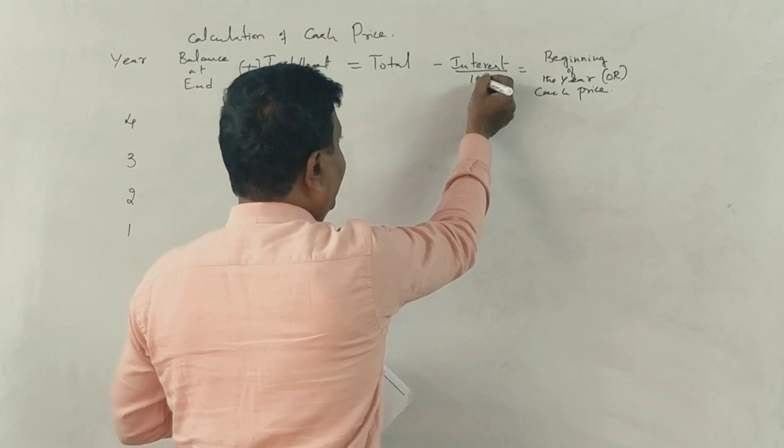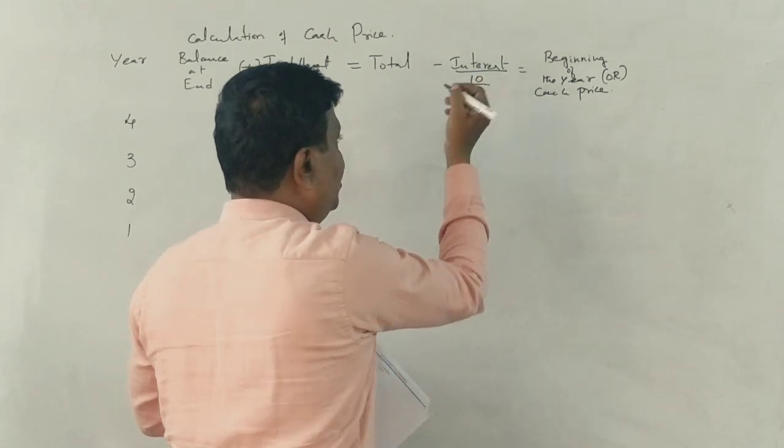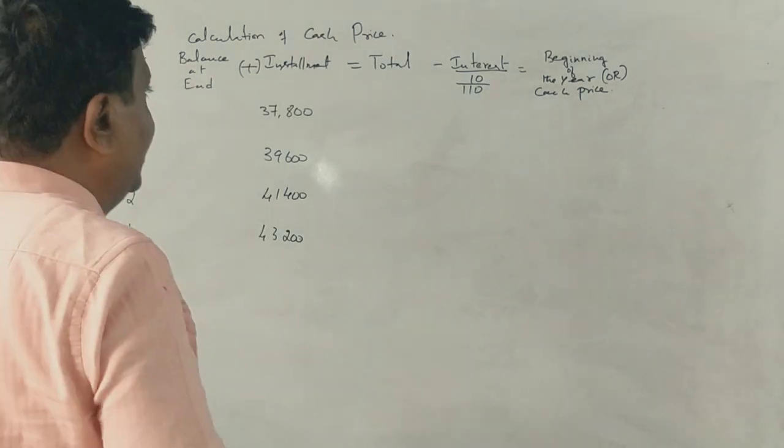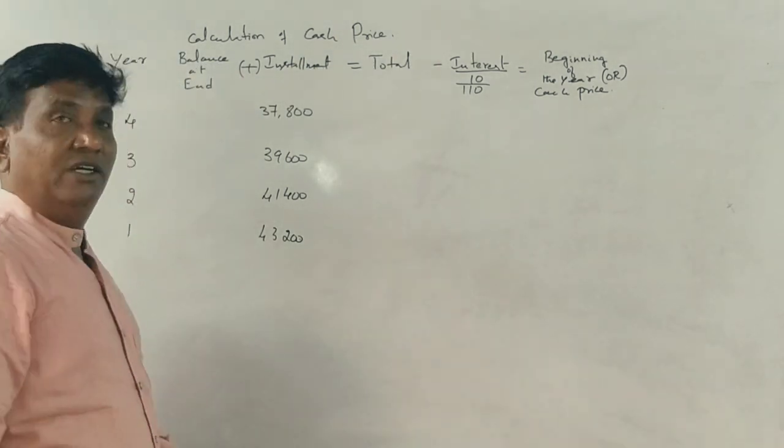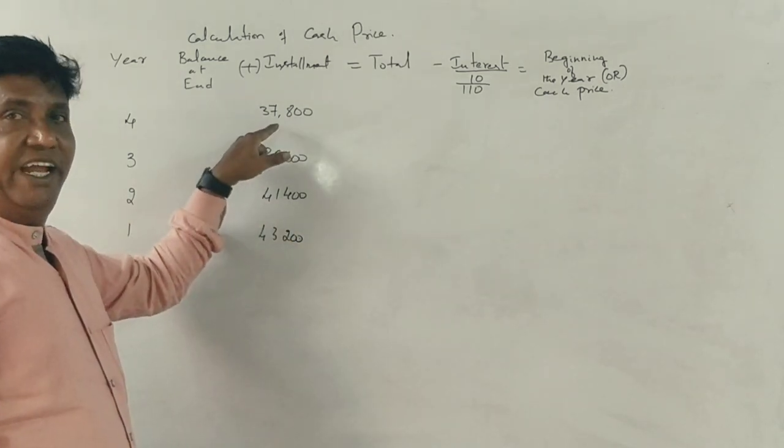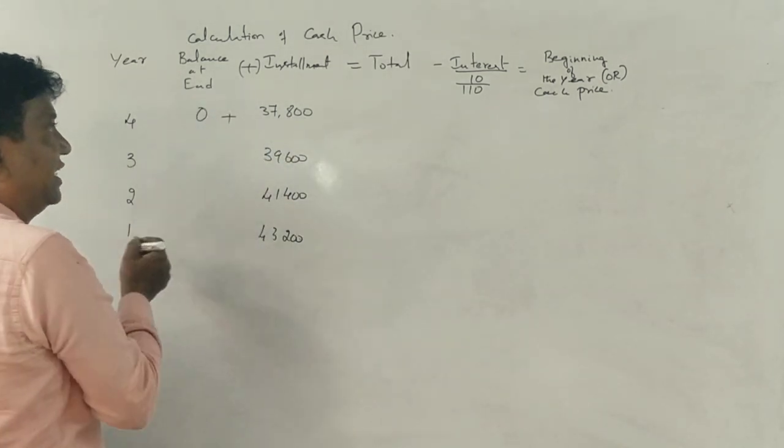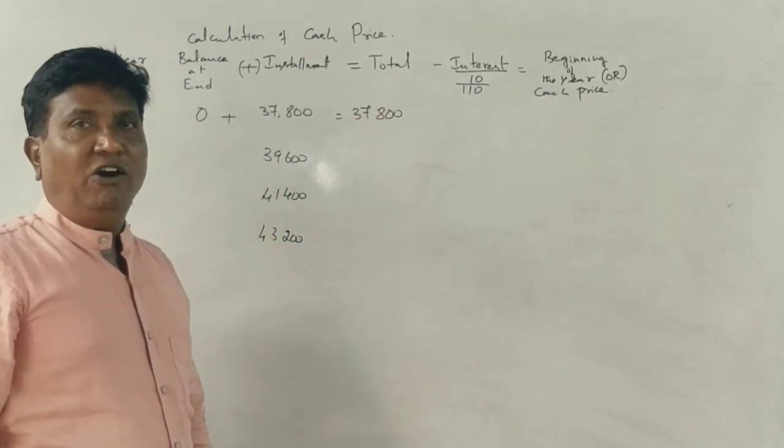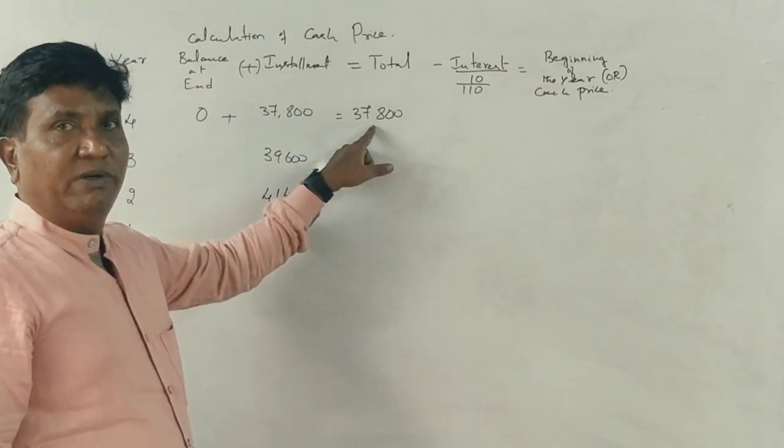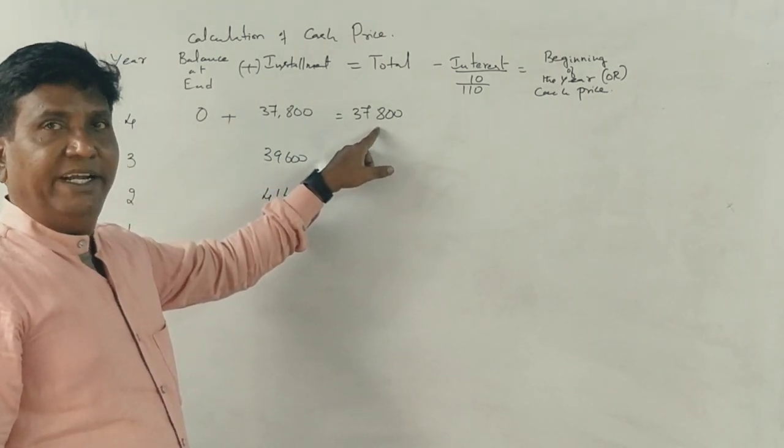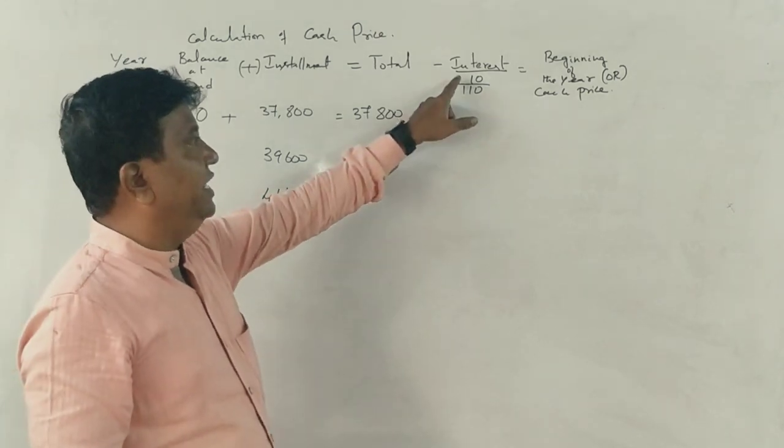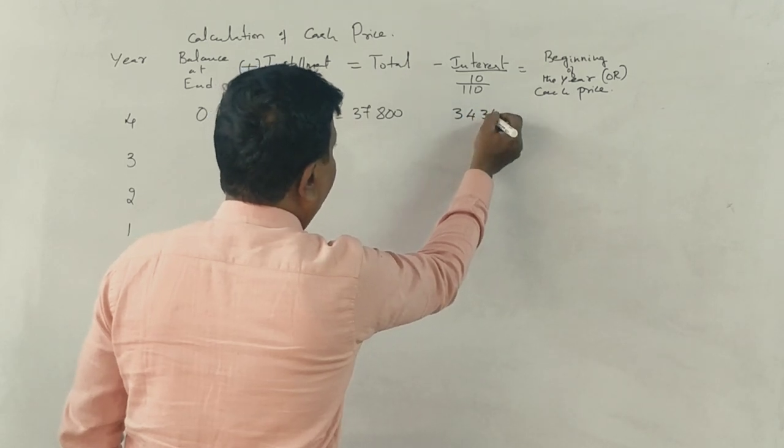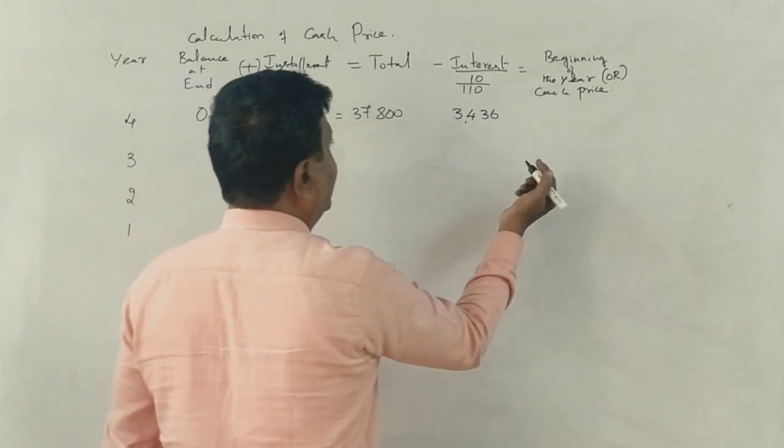Interest calculation. 4 years, 37,800 is correct. 37,800 interest is principal, interest into 10 divided by 110. Result: 34,364.